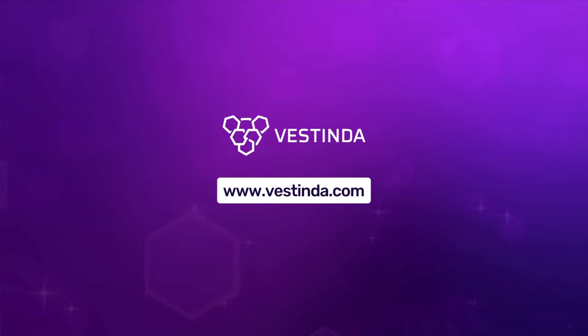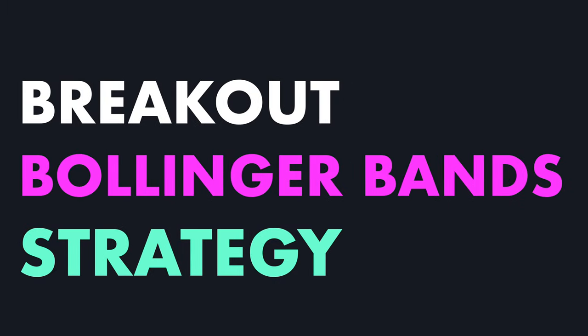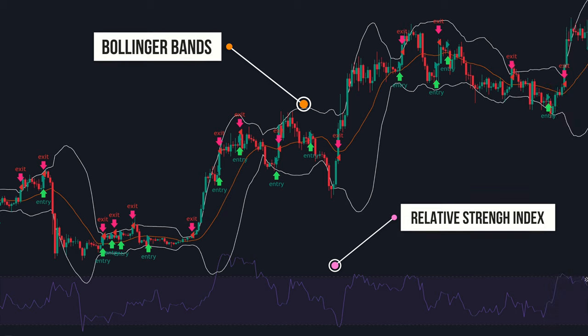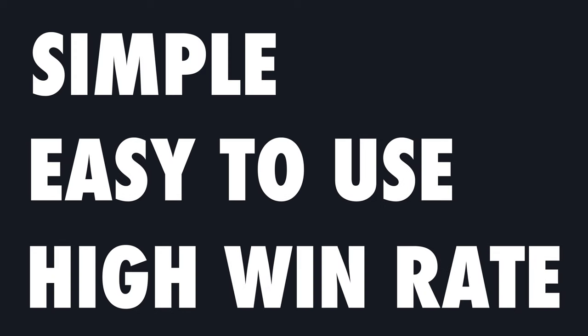Hey there. Today I've got an awesome trading strategy to share with you. It's super effective and involves using Bollinger Bands and RSI on a 4-hour time frame. This strategy is simple, easy to use, and has a high success rate if you use it correctly. So let's dive right in and check it out.